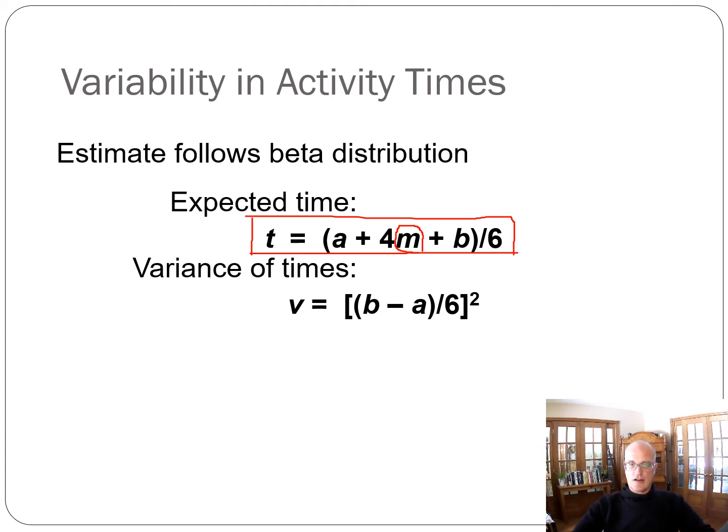The variance of a task time, the variance is equal to B minus A, pessimistic time which is bigger, minus the optimistic time, divided by 6, and then squared. And so that gives you the measure of the variance.